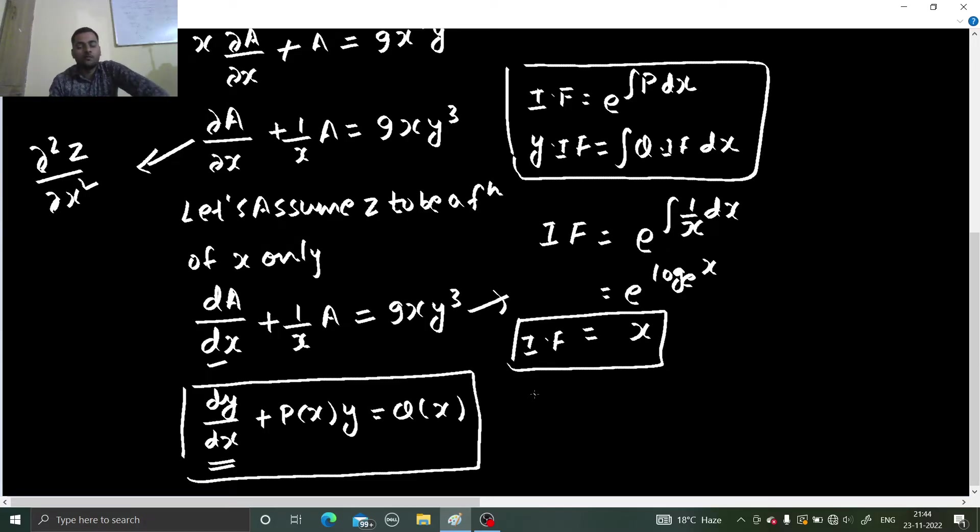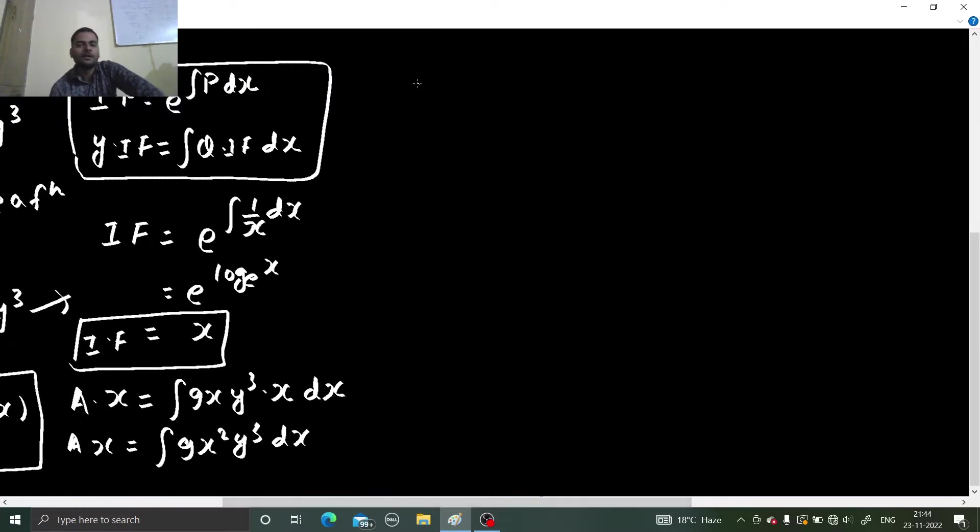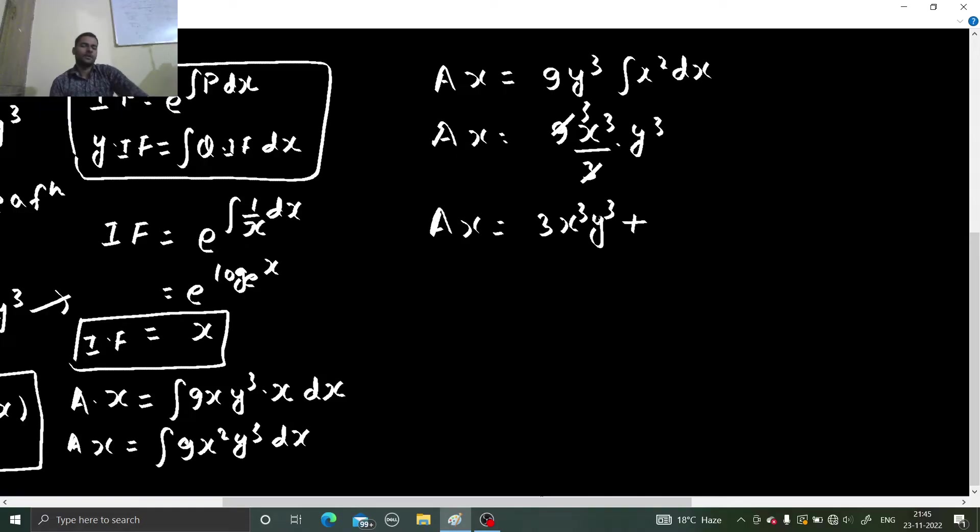What's next? In place of y we have A. So A into integrating factor, integral q which is 9xyq³, integrating factor x dx. So Ax equals 9x square yq³ dx. Your Ax equals to 9yq³ comes out, integral of x square dx which will give you nothing but x cube by 3. So you are getting Ax equals to 3x cube yq³ and a constant will come which I am writing as c.